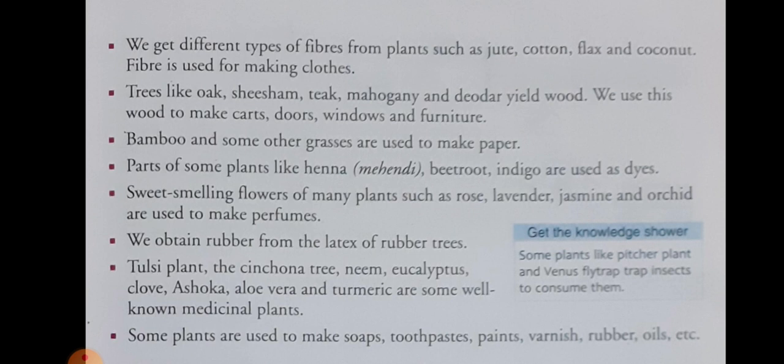Parts of some plants like henna, beetroot, indigo are used as dyes. Sweet-smelling flowers of many plants such as rose, lavender, jasmine, and orchid are used to make perfumes. We obtain rubber from the latex of rubber trees.